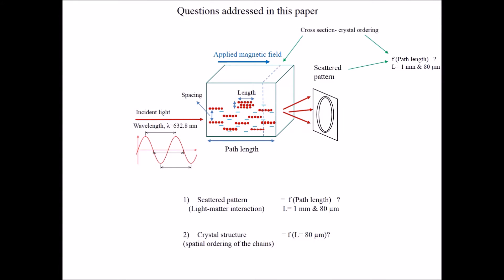On passing laser light through the nanofluid kept inside a quartz cuvette, and investigating the observed scattered pattern, we address two questions. First, how does the interaction of light with field-induced crystal structure vary depending on the sample path length? Second, what is the crystal structure for the path length of 80 micrometer? Is it 2D hexagonal or 3D hexagonal?